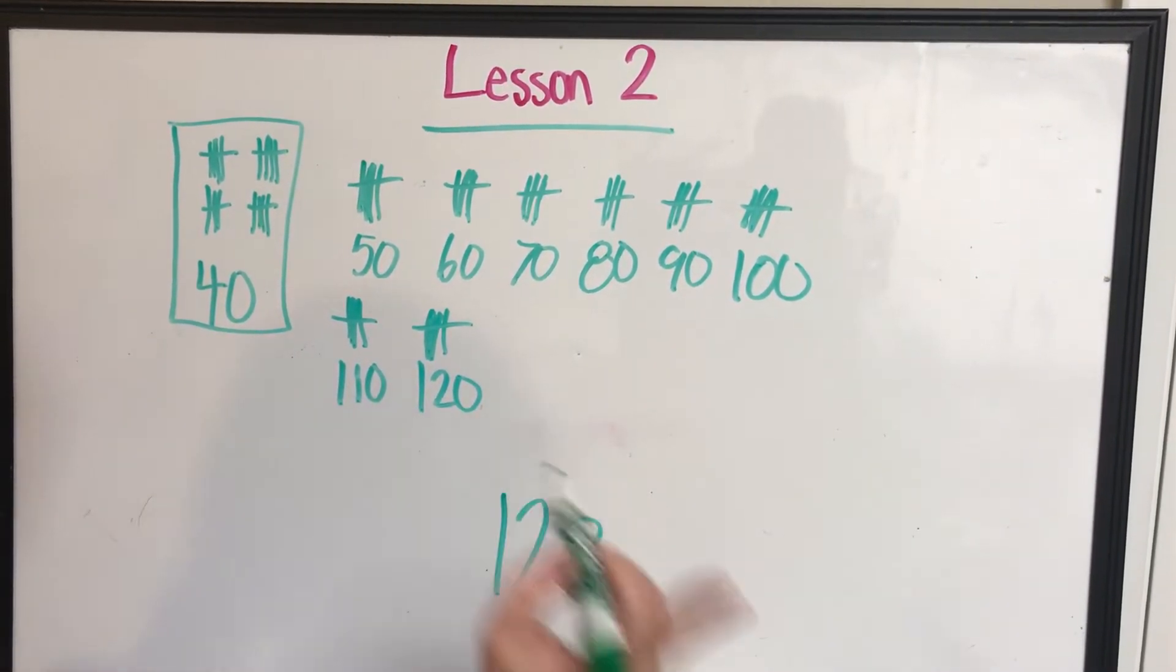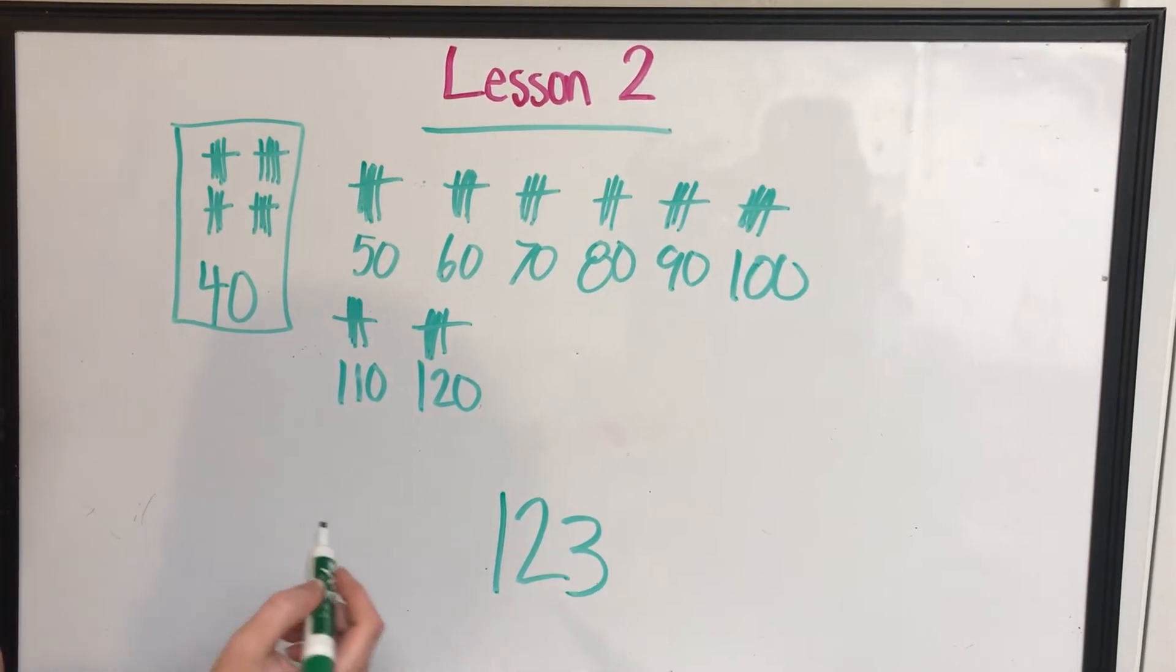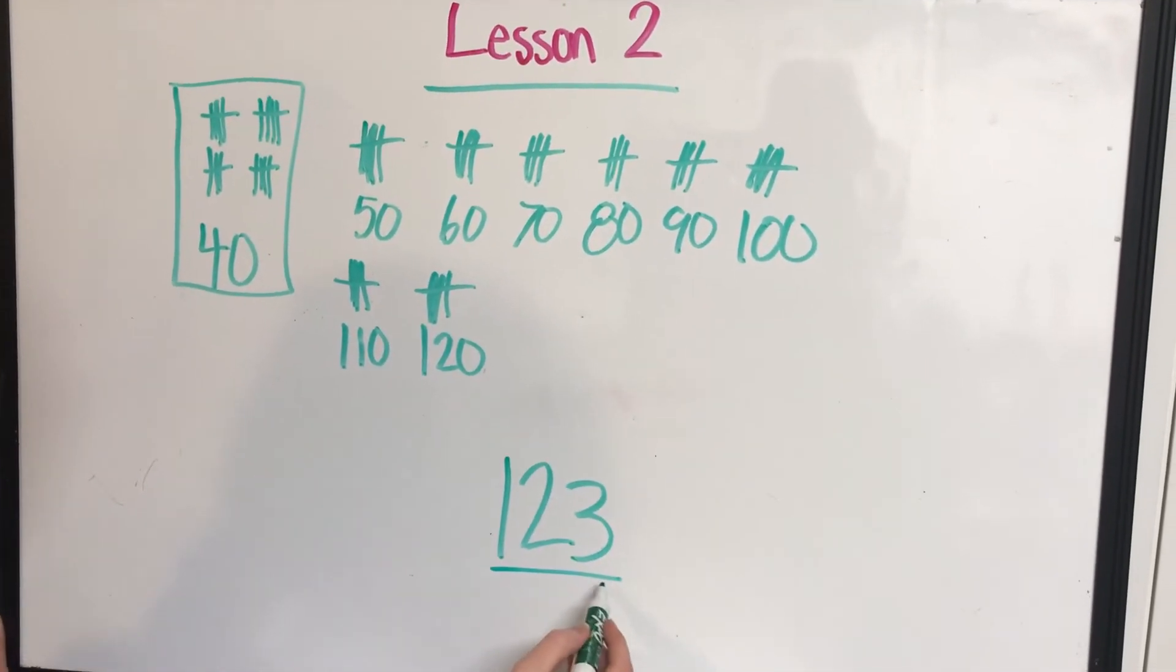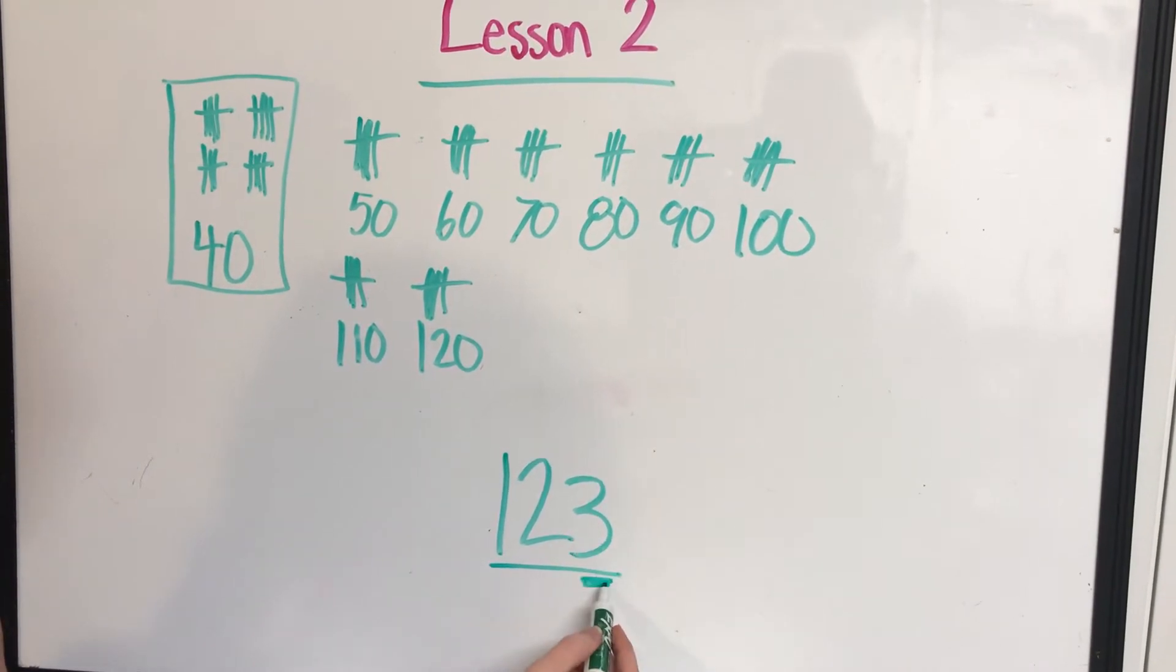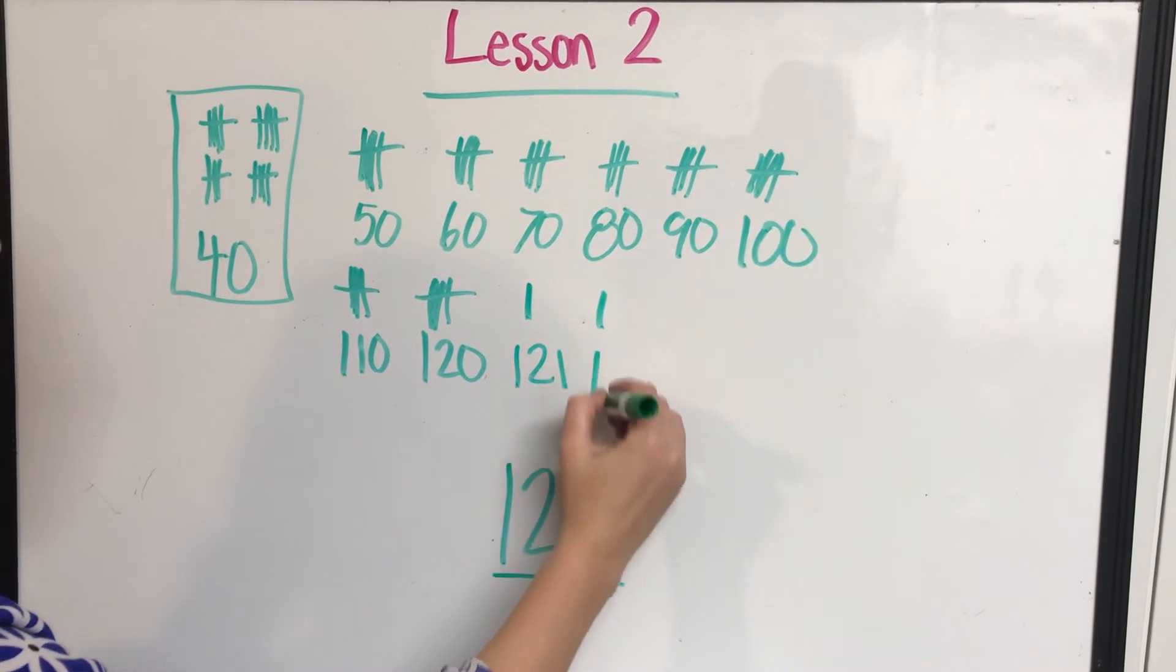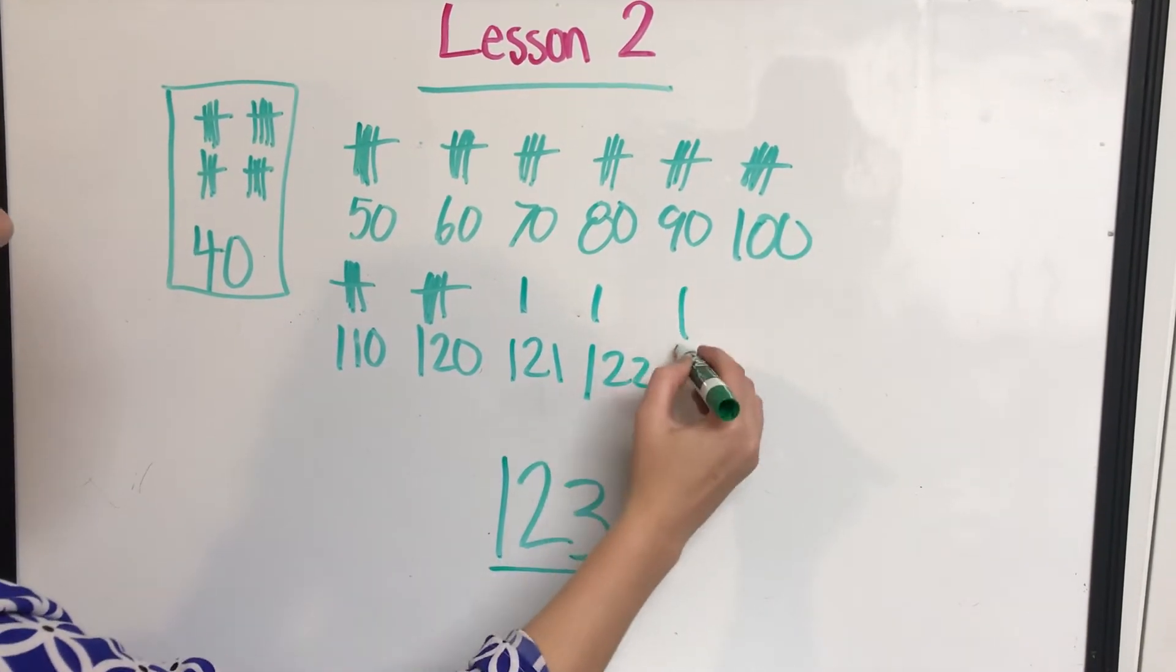Now stop. Can I add another tens block? No, because it's going to bring us to 130. I'm trying to get to 123. I only need three ones because I have a three in my ones place. So I'm going to do a one. That's going to be 121. A one, that's 122. And a one, that's 123.